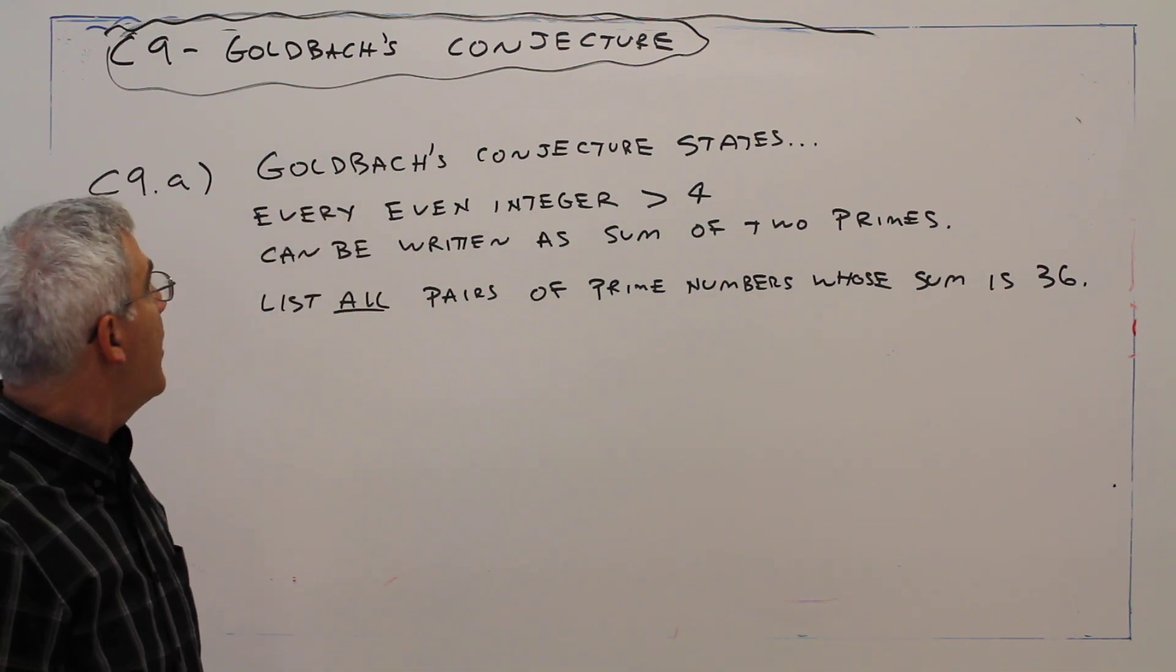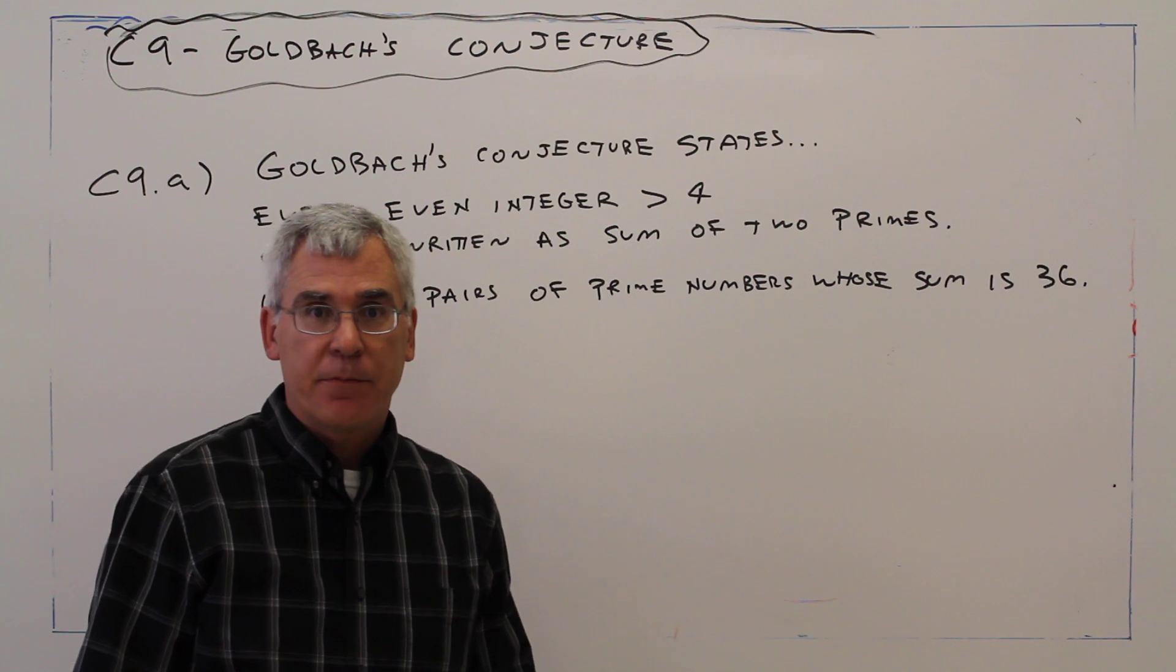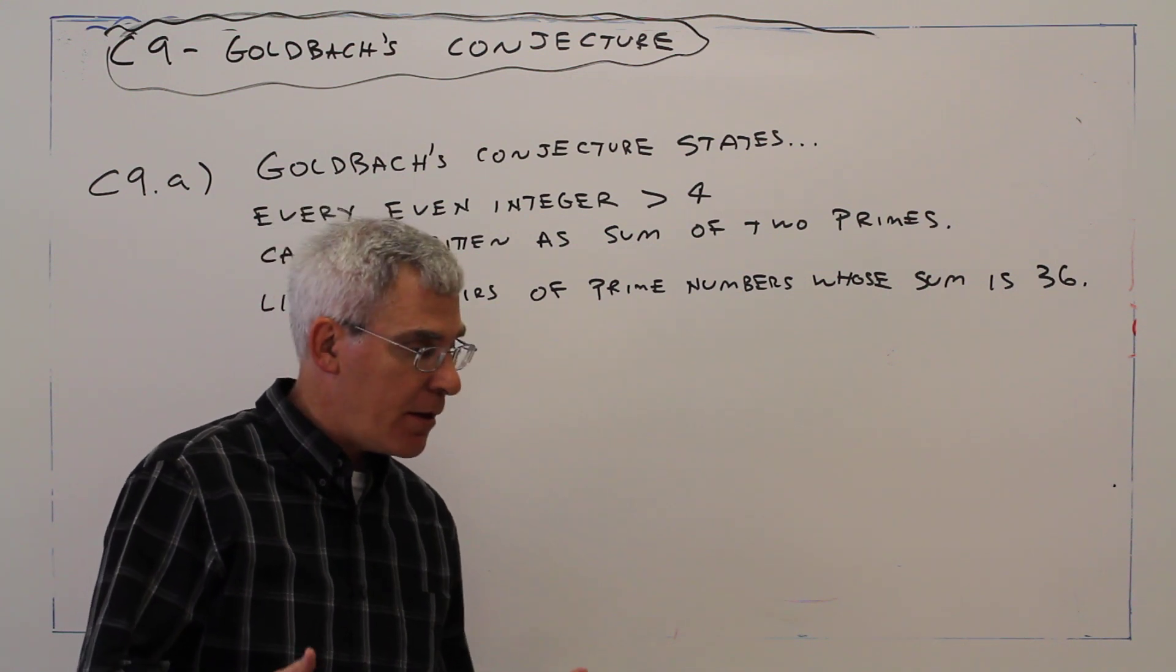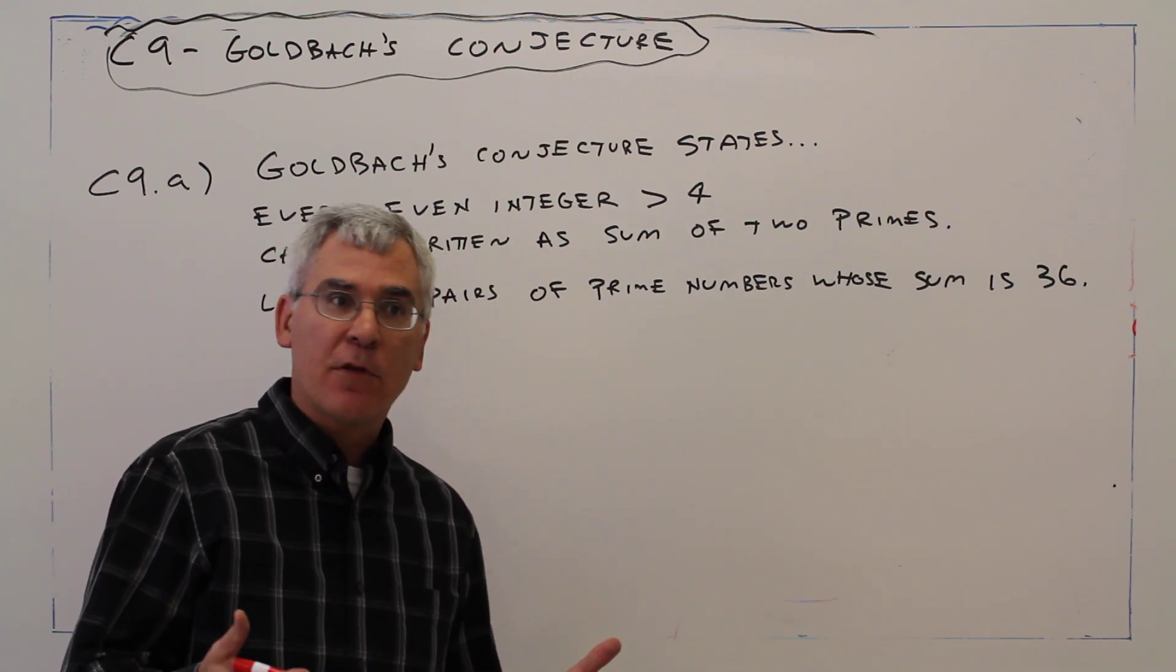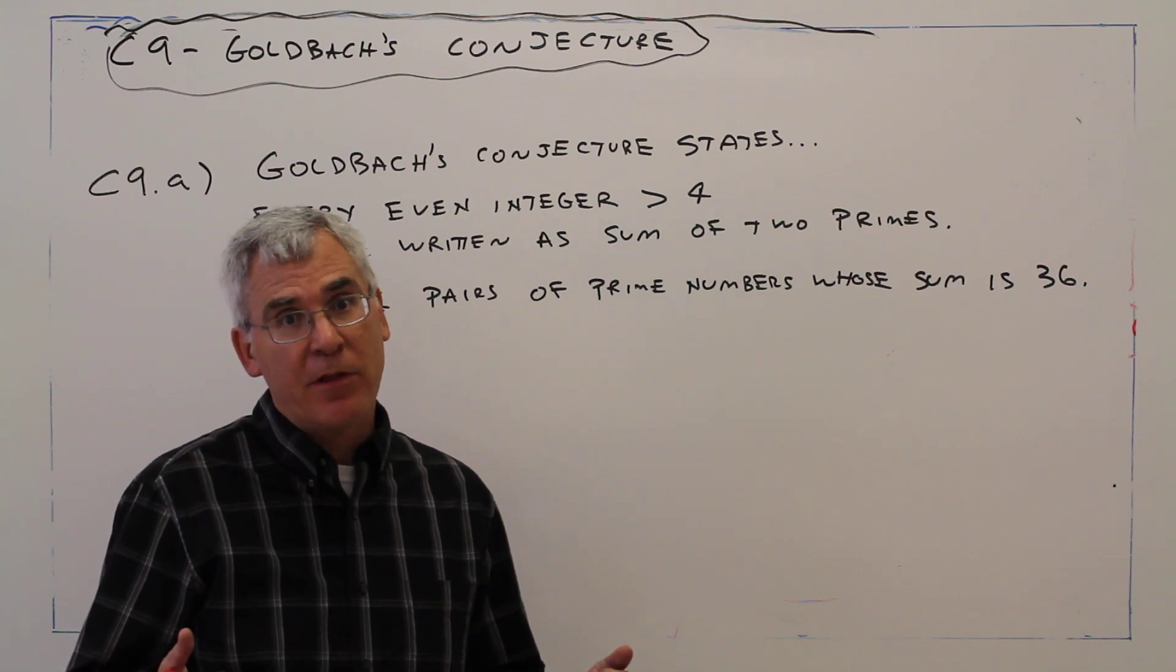Welcome to video C9, Goldbach's Conjecture. A conjecture is something that people think is true, but it can't be proven like a theorem.